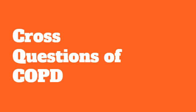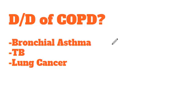In this video, I will be talking about the other things the teacher asks in the exams. When you present the history in a long case, the first thing most teachers ask is: what are your differentials? In case of COPD, the differentials would be bronchial asthma, tuberculosis, and lung cancer. In case of asthma and COPD, their signs and symptoms are almost similar, that's why we have kept bronchial asthma as a differential.